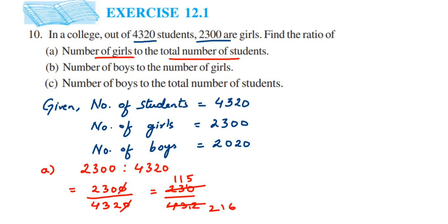Since 216 is an even number and 115 is an odd number, there is no common factor to cancel them further. So the answer for the first ratio — girls to total students — is 115 : 216.